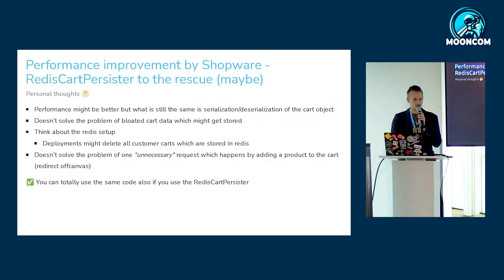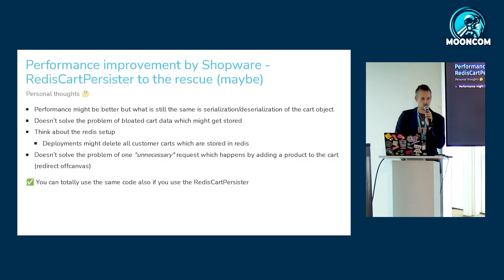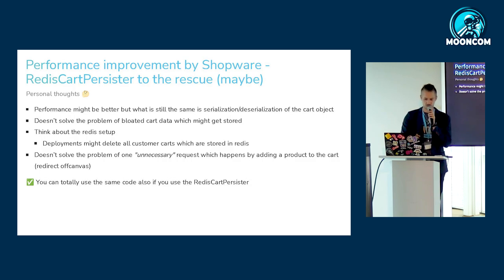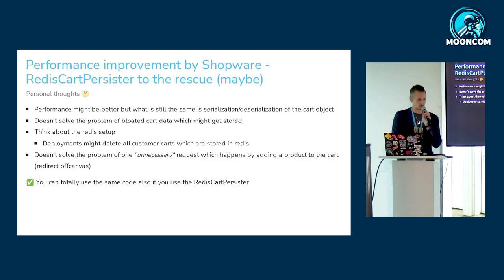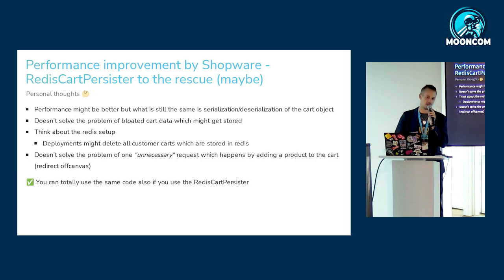There were some performance improvements by Shopware with the Redis cart persister. The performance might be better, but there is still the step of serialization and deserialization to ensure all objects work after being stored or read from the Redis client. It doesn't solve the problem of a bloated cart data object — it's still the same without the cleanup logic I showed you. Also, think about your Redis setup: working with just one Redis database is not enough, because a deployment might drop all existing carts for your customers in production. And of course, it also doesn't solve the unnecessary second request when adding a product to the cart.